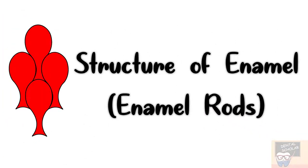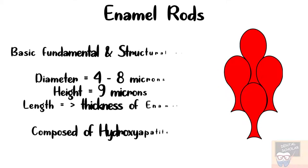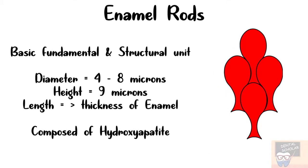In this video I am going to tell you about the structure of enamel. The basic, fundamental and structural unit of enamel is enamel rod. It was first described as enamel prism, so it is also known as enamel prism.